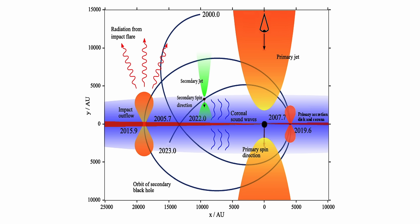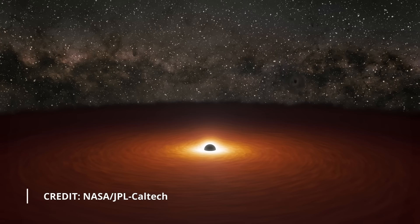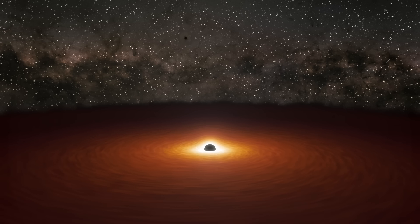What is important to understand is that they are not actually observing two jets. Instead, they explain the variations in the emissions using the idea of two black holes, with one interacting with the accretion disk of the larger one.